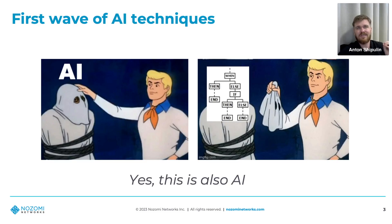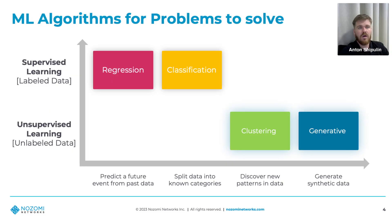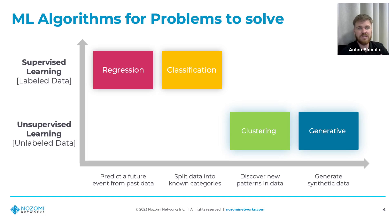Machine learning is the real AI for solving big data problems. There are four major machine learning algorithm groups: regression algorithms that predict future events from past data; classification algorithms that split data into known categories; clustering, which discovers new patterns in data without knowing categories; and generative algorithms that produce synthetic data — as we see with GPT-based chat systems today.